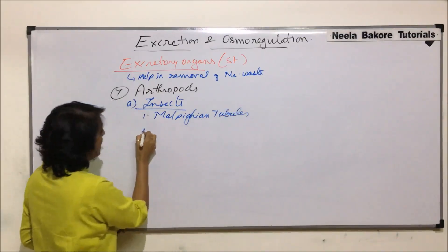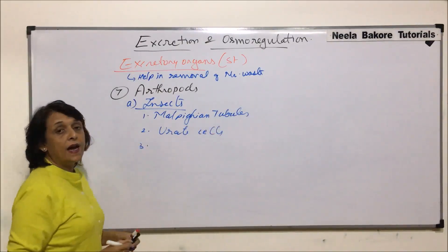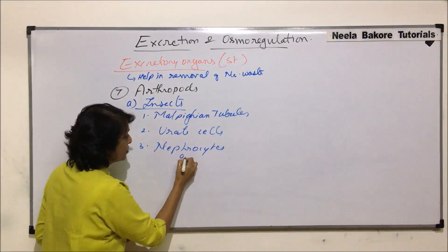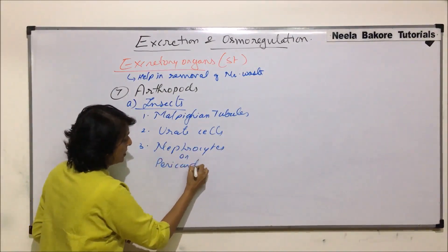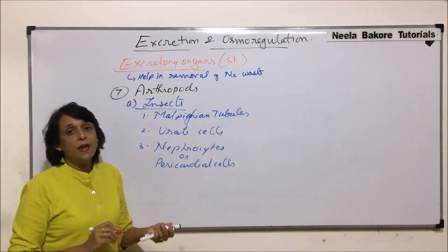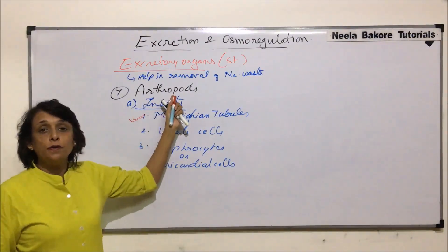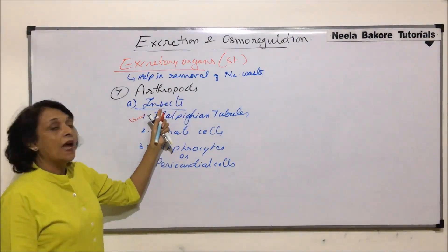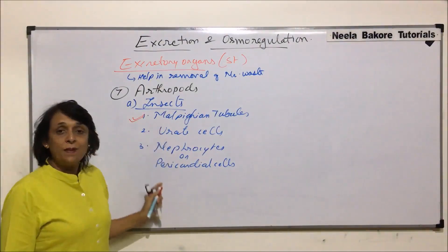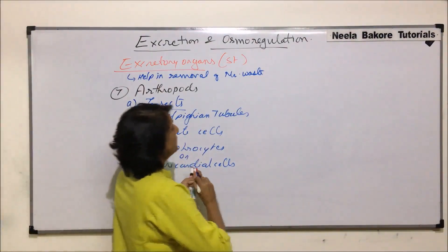The second structure is urate cells, and the third is nephrocytes — these are also cells and are called pericardial cells. So there are three structures which help in elimination of the main nitrogenous waste, but the most important of these three is malpighian tubules. We are talking of phylum Arthropoda — first insects, then crustaceans. The most important structure is malpighian tubules.